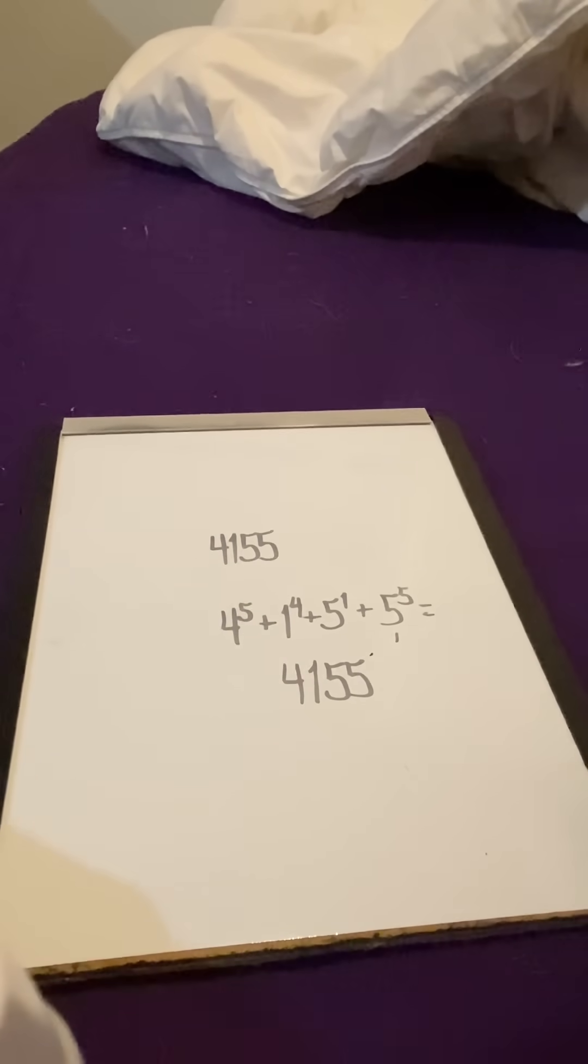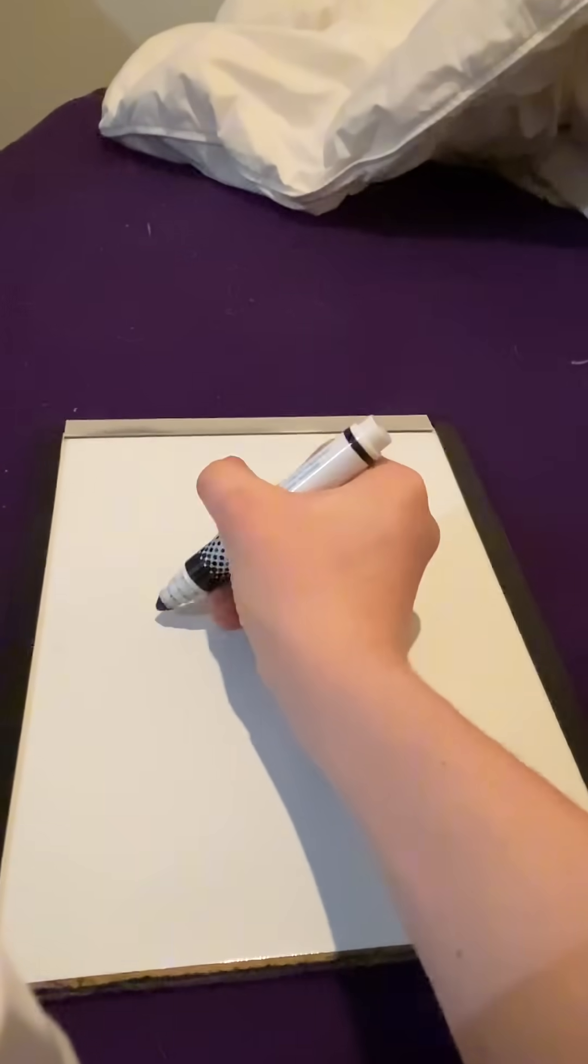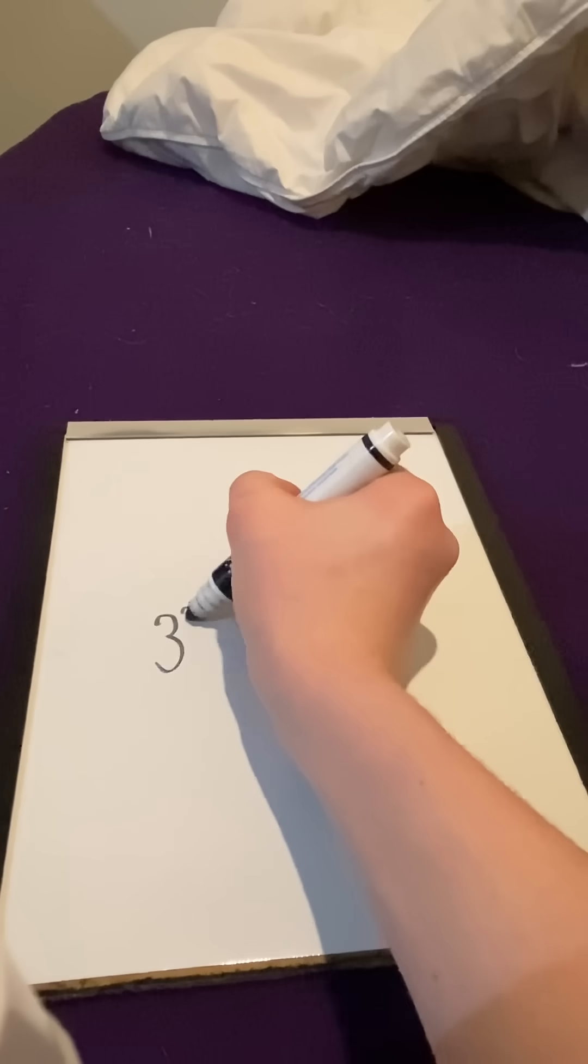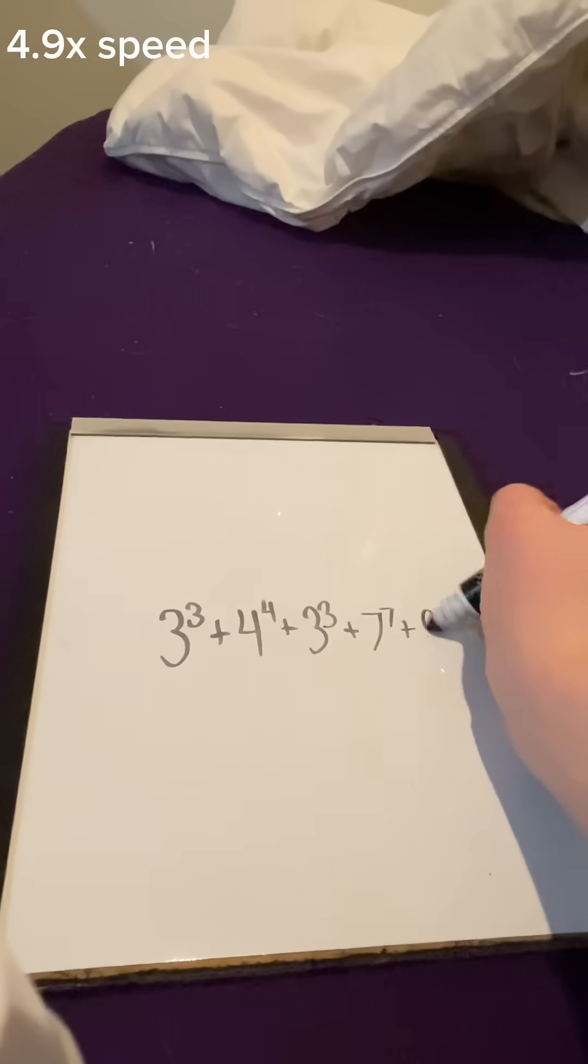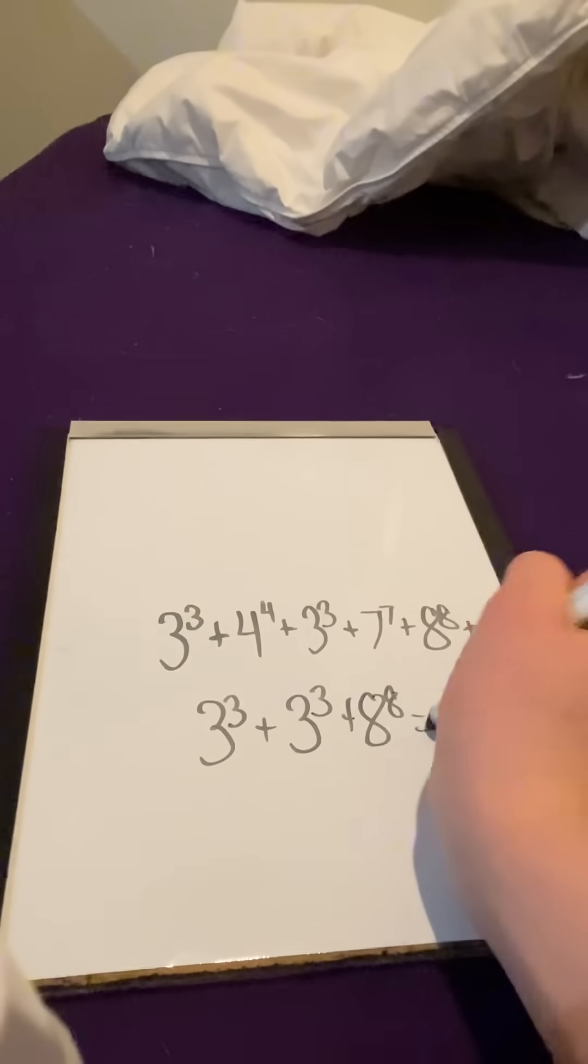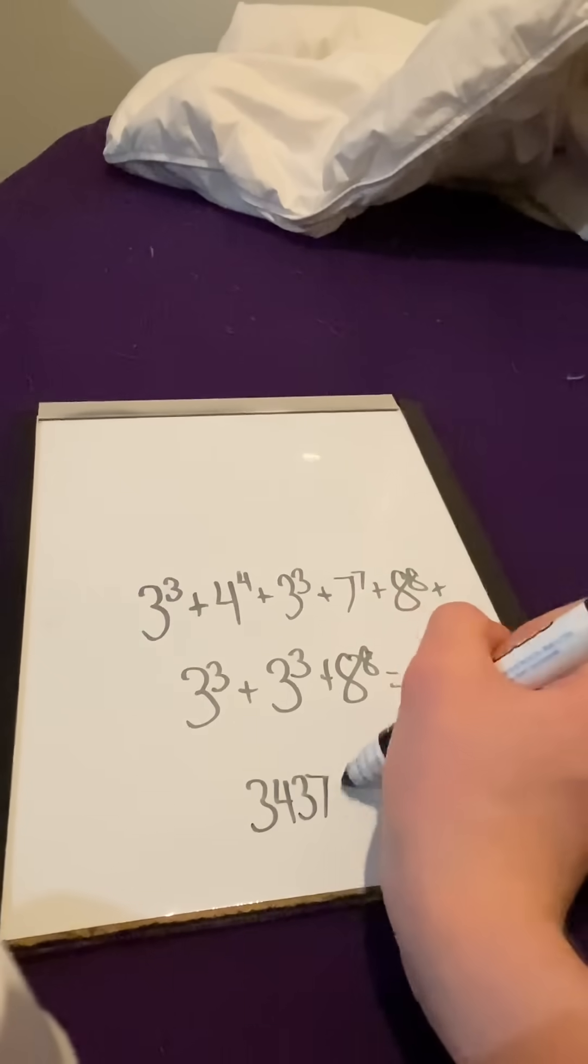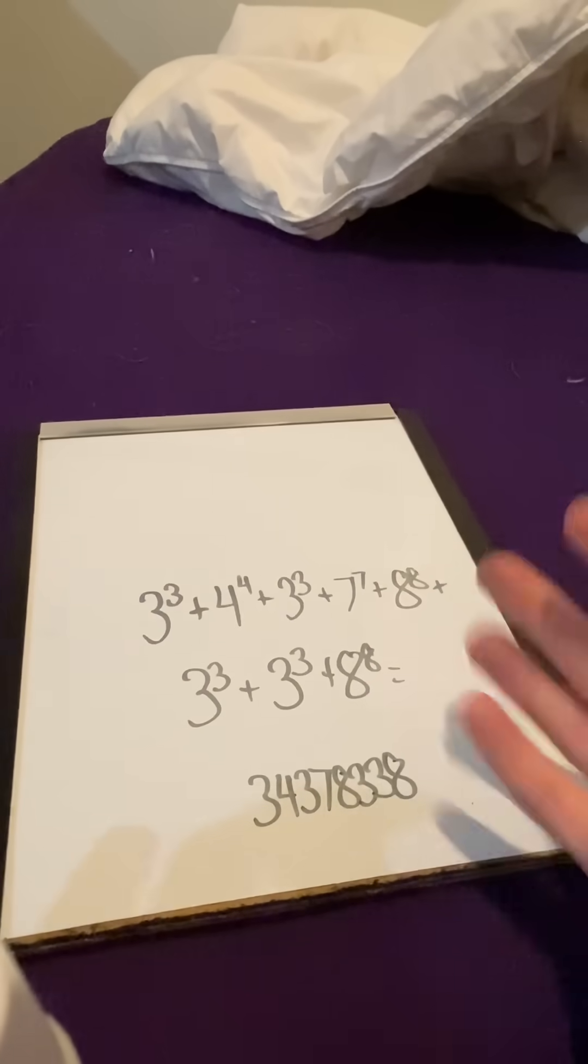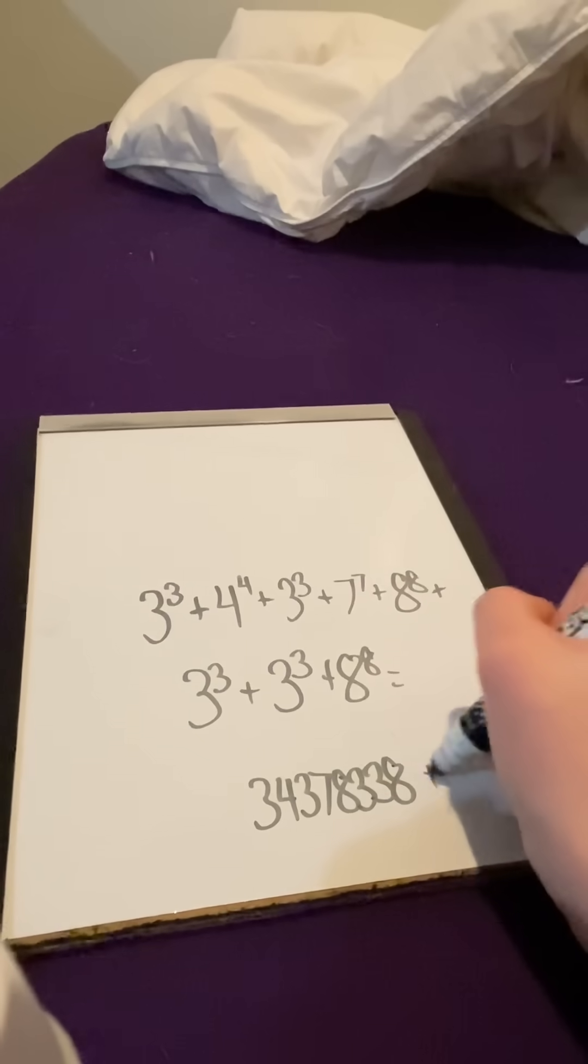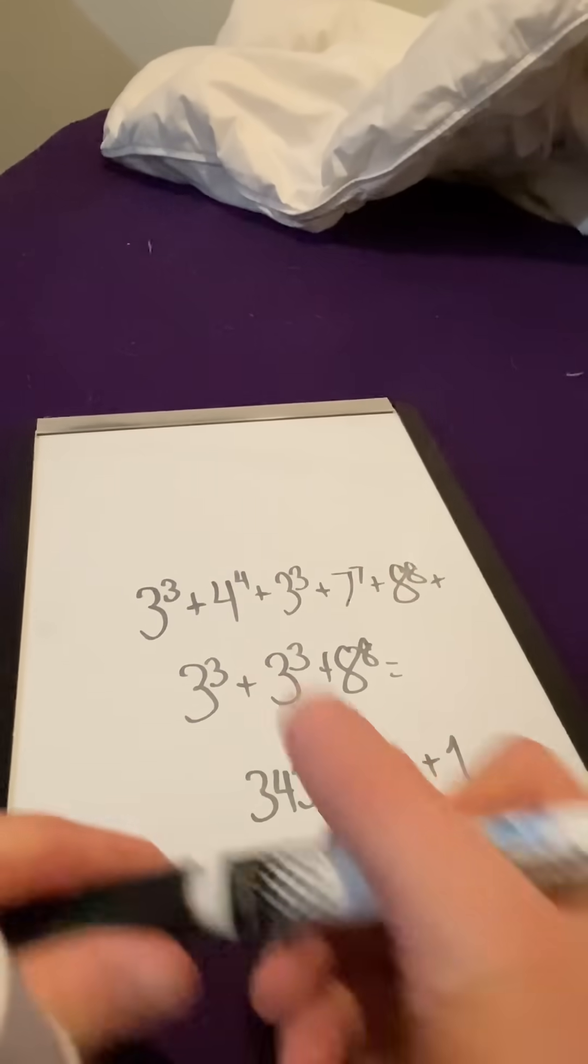I hope that helps. And this next one might surprise you, but next we have 3 to the 3 plus 4 to the 4 plus 3 to the 3 plus 7 to the 1st plus 8 to the 4. You might be seeing, obviously it's 34,378,338. Or is it? This is mildly infuriating. I hate you!